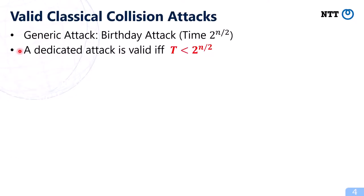In the classical setting, the generic attack or the birthday attack finds a collision of a random function in time 2 to the power n over 2, if the output length of the random function is n. So in the classical setting, a dedicated collision attack on a concrete hash function is considered to be valid if and only if its time complexity is less than the birthday bound 2 to the power n over 2.